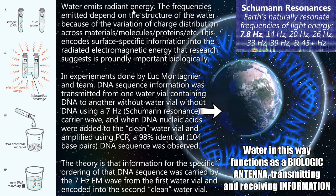Water emits radiant energy, and the frequencies emitted depend on the structure of the water because of the variation of charge distribution across materials, molecules, and proteins. You have water completely hydrating and surrounding different materials like cell membrane or DNA, and the specific structure of that material or protein or larger molecule will determine the dipole arrangement of these water molecules — they take on a specific form and shape and structure. The crystalline structure is very adaptable to the different materials it's in contact with, encoding surface-specific information into the electromagnetic energy radiated by water. Research suggests that this is profoundly important biologically.